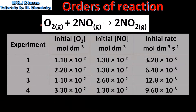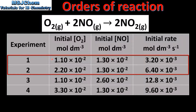In our next example we will determine the orders of reaction with respect to oxygen and nitrogen monoxide in this reaction. Starting with the oxygen, if we look at experiments 1 and 2 we can see that the concentration of oxygen has doubled whereas the concentration of nitrogen monoxide remains constant. If we look at the initial rate of reaction we can see it has doubled. So when the concentration of oxygen is doubled the rate also doubles — therefore the reaction is first order with respect to oxygen.